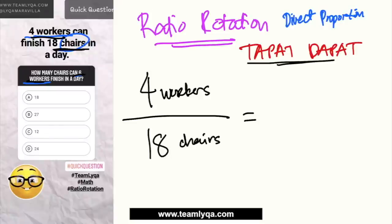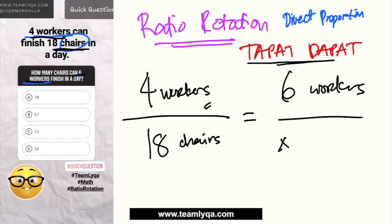Ibig sabihin, kung ito yung workers sa side, dito ko siya ilalagay sa taas — 6 workers. Kasi ang hinahanap mo ay kung ilan yung chairs. Sa math, yung hinahanap nagiging x. Now, ratio rotation — ang gagawin natin, instead of doing cross multiplication, iikot natin siya.